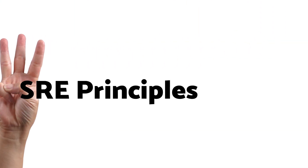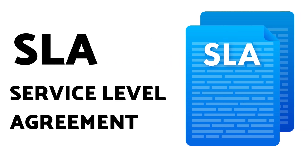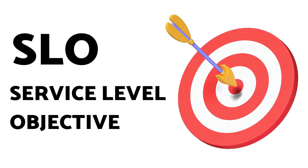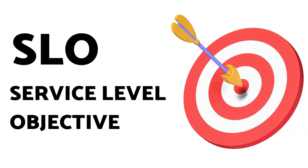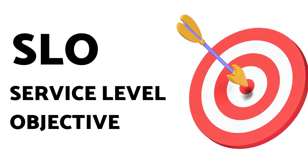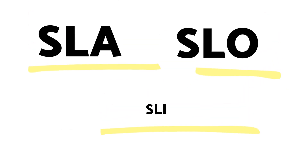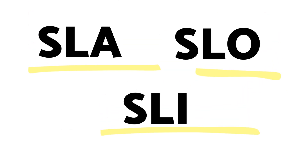The three terms we are going to understand today are SLA, which is short for Service Level Agreement; SLO, which is Service Level Objective; and SLI, which is short for Service Level Indicator. The three terms are closely related and, as their names suggest, have different meanings.